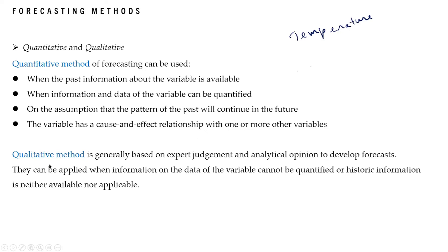The next method of forecasting is the qualitative method. Here it is usually based on expert judgment and analytical opinion which is used to develop the forecast. This method is applicable when the data of the variable cannot be quantified, or if historic information is not available or not applicable. In those cases, the qualitative method of forecasting is used.